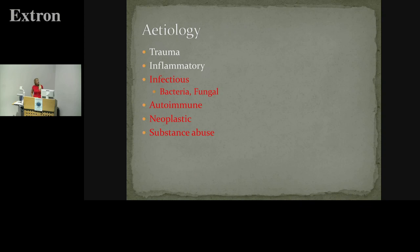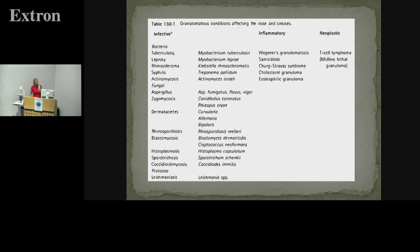We're going to be talking about granulomatous conditions, and if we apply our surgical sieve, they can be caused predominantly by infectious reactions, autoimmune, neoplastic, or substance abuse. There's a huge range of different bacteria — mycobacteria can cause granulomatous tissue. In inflammatory conditions, neoplastic conditions are relatively rare, and cocaine use is not on that list.